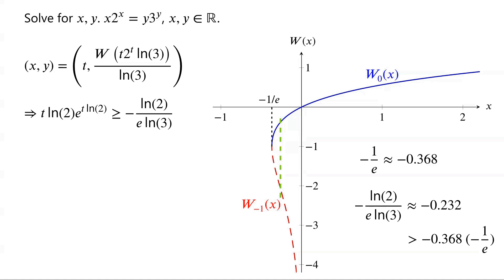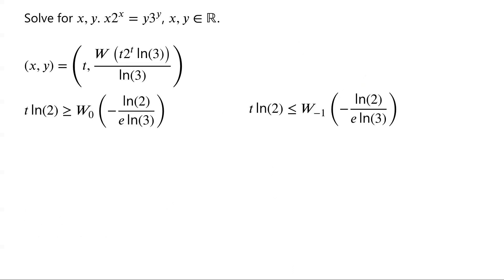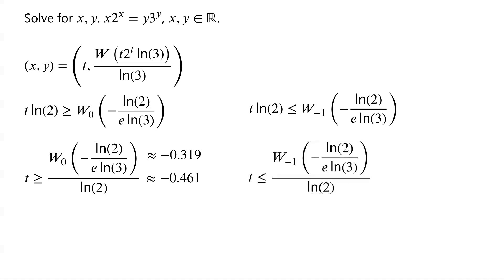Applying the Lambert W function to the inequality gives two cases: either t times ln(2) ≥ W0(−ln(2) / (e times ln(3))), or t times ln(2) ≤ W(−1)(−ln(2) / (e times ln(3))). For the W0 branch, t ≥ W0(−ln(2) / (e times ln(3))) / ln(2). Since W0 ≈ −0.319, t ≥ approximately −0.461. For the W(−1) branch, t ≤ W(−1)(−ln(2) / (e times ln(3))) / ln(2). Since W(−1) ≈ −2.288, t ≤ approximately −3.302.